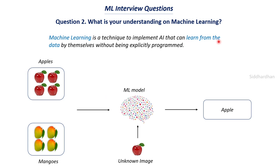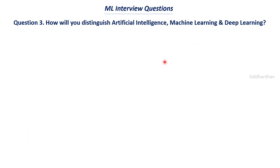The model learns from the data by itself — we don't explicitly program it. What 'explicitly programmed' means is that we don't tell the model that an apple looks red or a mango looks yellow — the model finds that by itself. So machine learning is a technique to implement AI that learns from data without being explicitly programmed. You should be able to tell the difference: AI is a technique to build smart machines, and machine learning is how we build those smart machines using data.